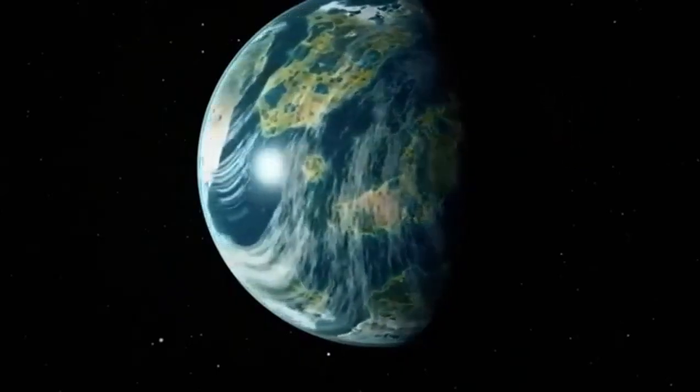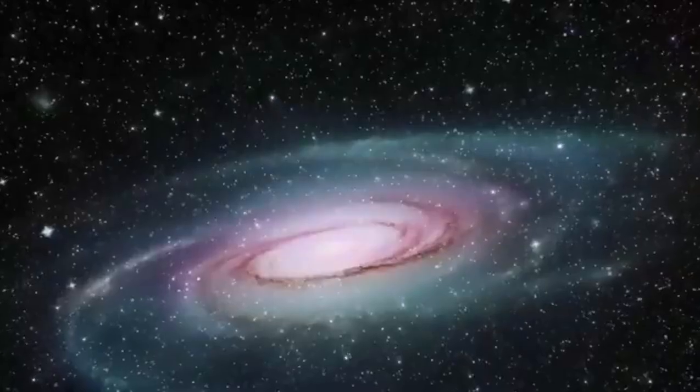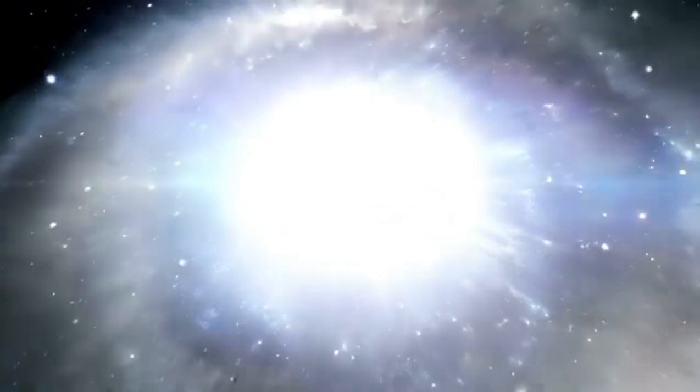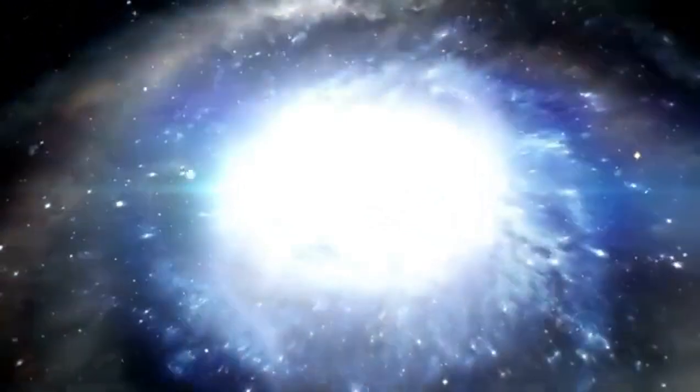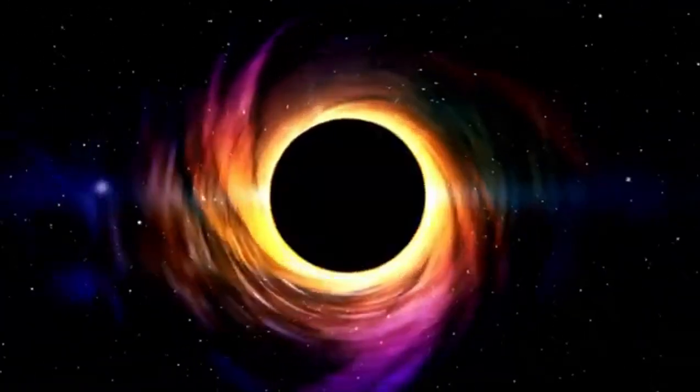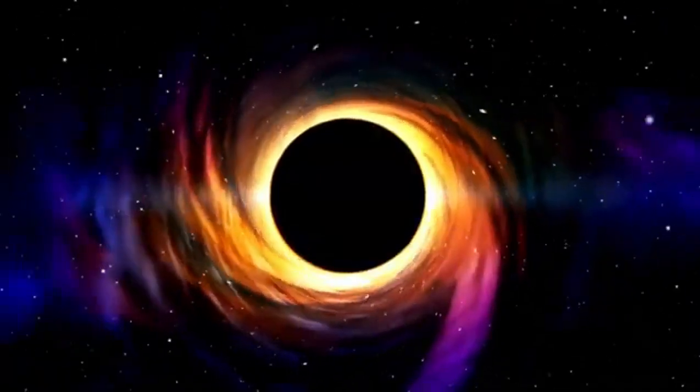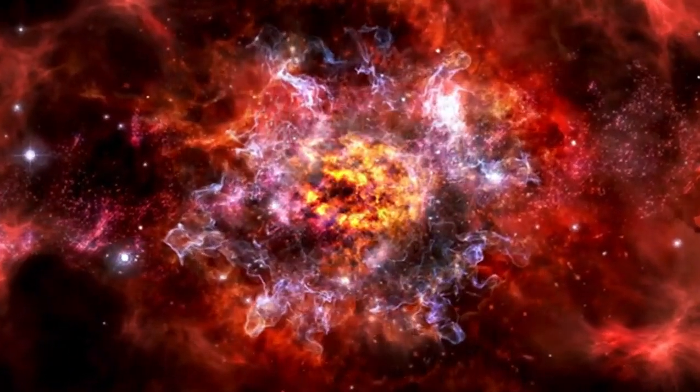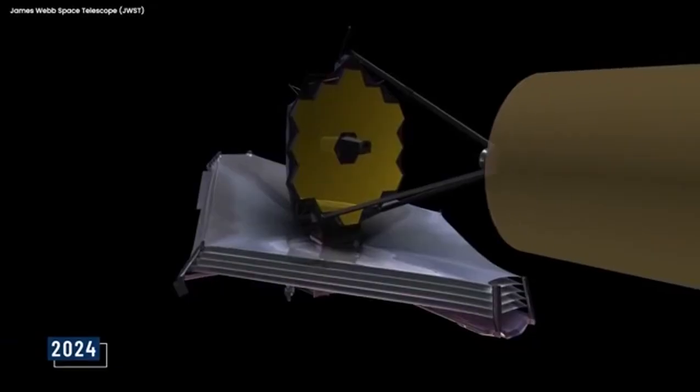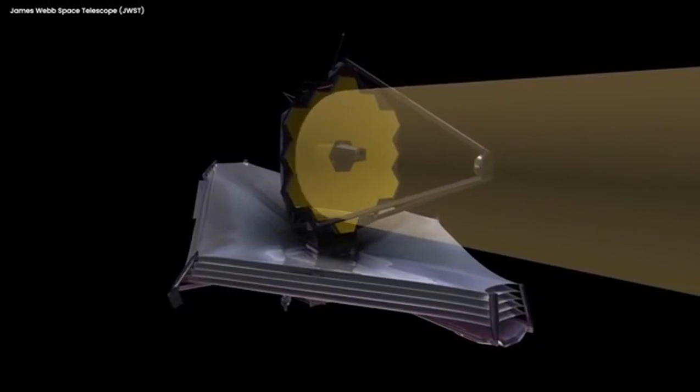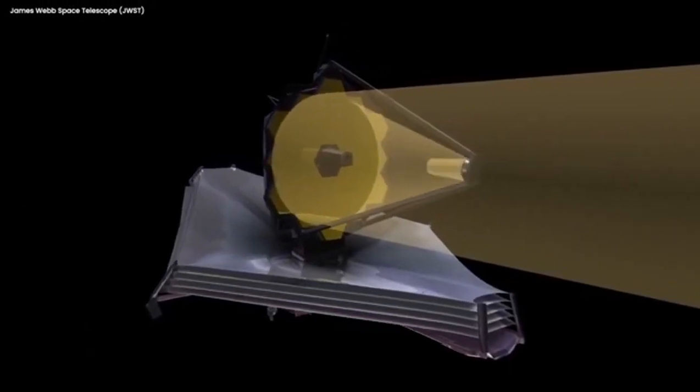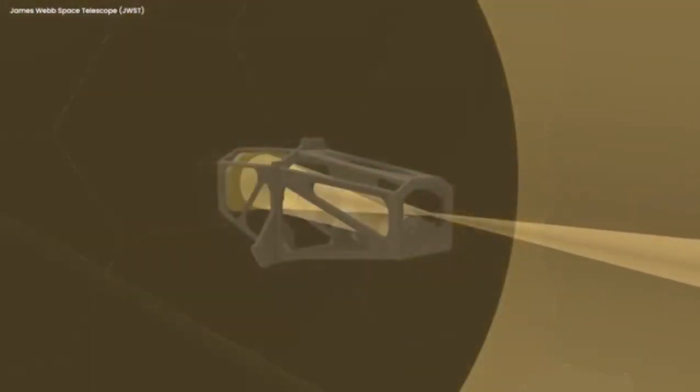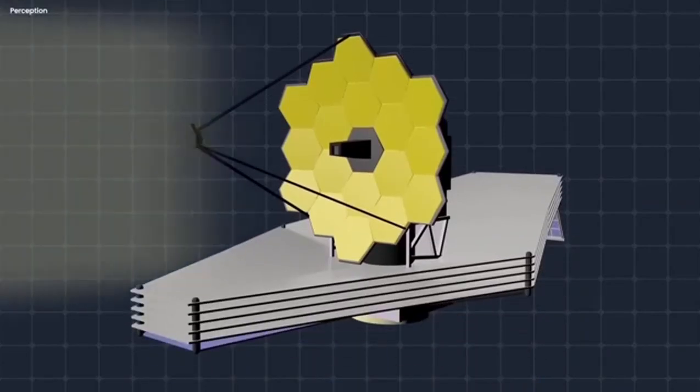Coming back to Proxima b, its mass is known to be equivalent to 1.07 Earths. Interestingly, it only takes 11.2 days to complete one orbit of its star. Compared to our 365.25 days, you can estimate the size of the star Proxima b is orbiting. Staggeringly, under the measurement of the entire electromagnetic spectrum, the star has a total luminosity of only about 0.16% that of the Sun.